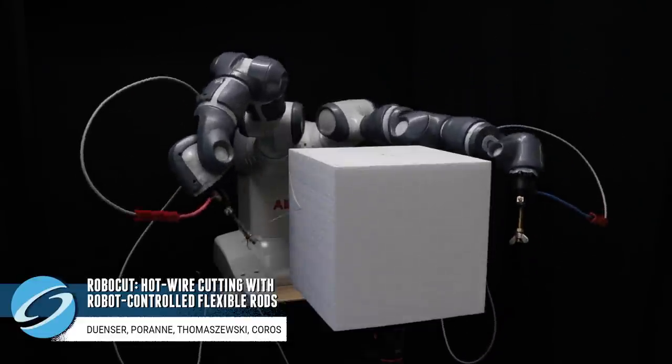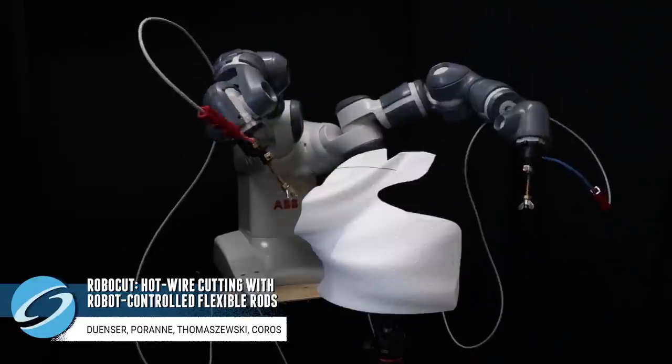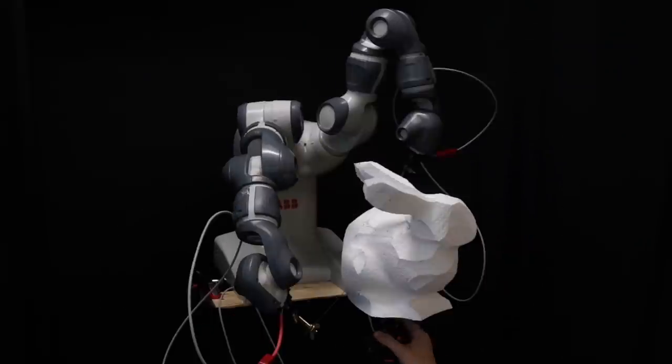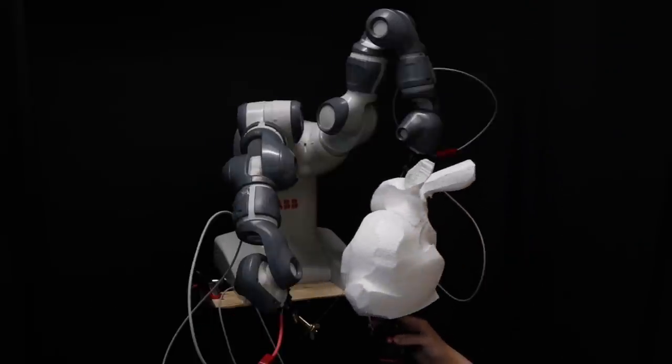By planning the motion of its two robot arms holding a deformable hot wire, this device can cut complex 3D shapes, like a bunny.